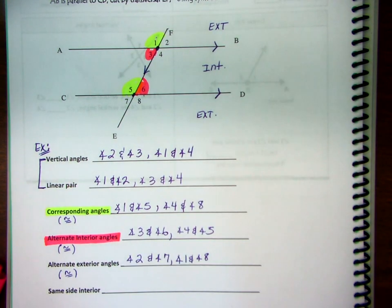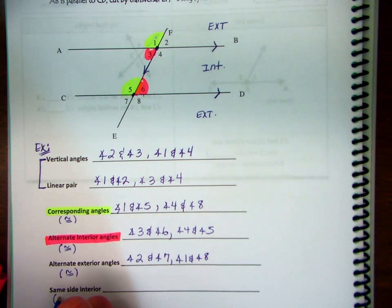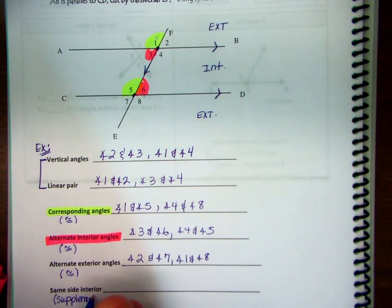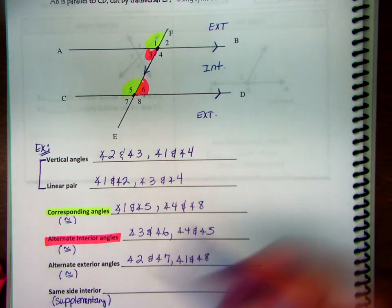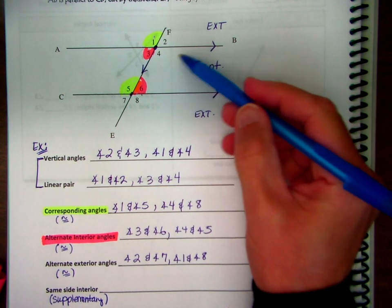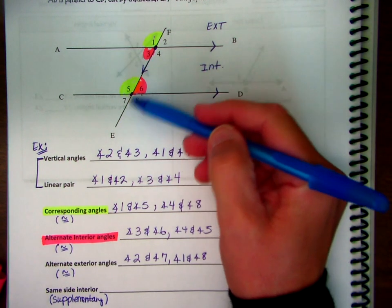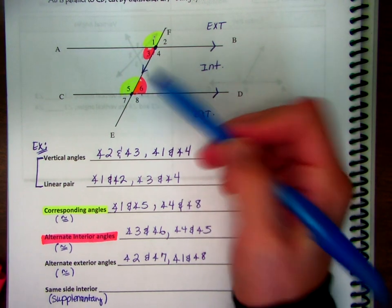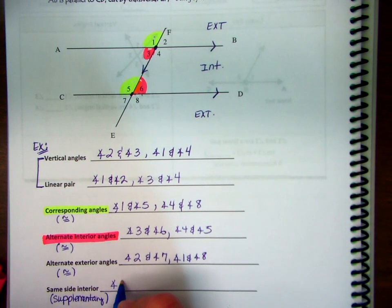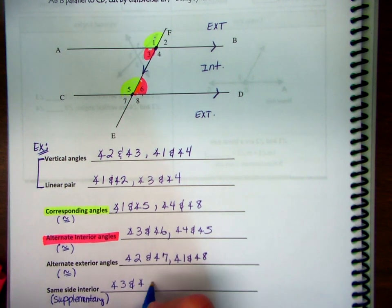The last angle pair is same side interior — or co-interior. They are supplementary. We're in the interior space, on the same side of the transversal. That would be something like three and five, and then four and six. Those are the only two same side interior pairs in the picture.